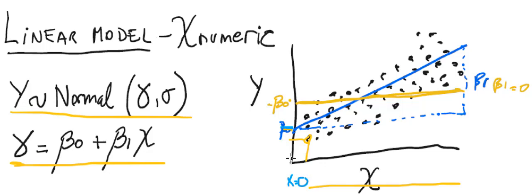So if x equals 0, beta 0 is the value we predict for gamma. So that's the value of gamma and it is our prediction of y.